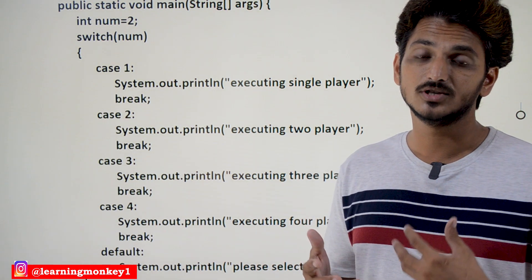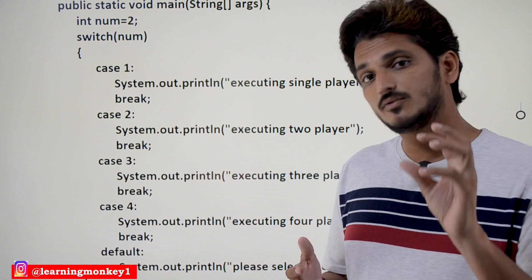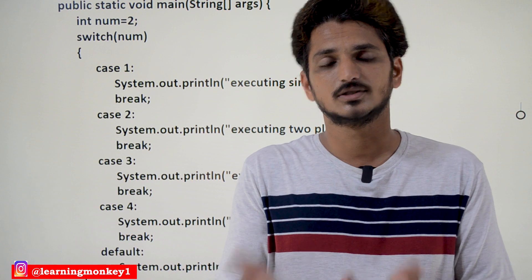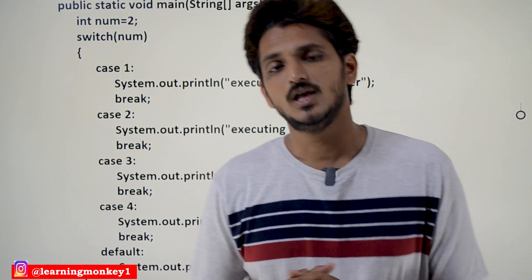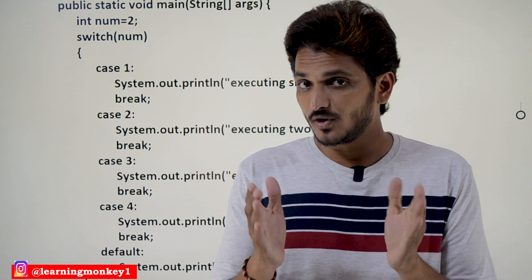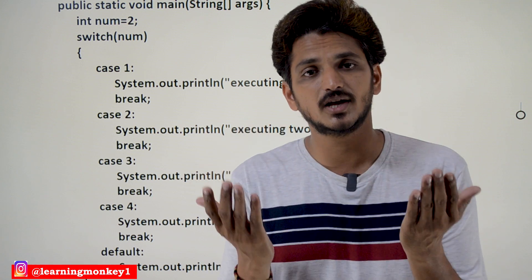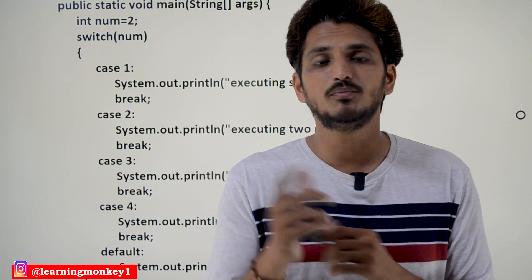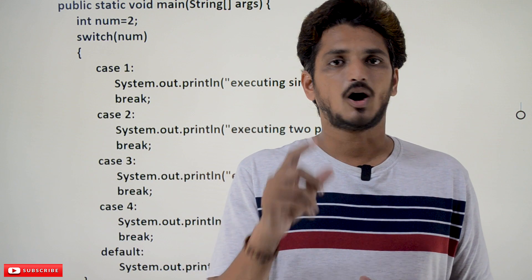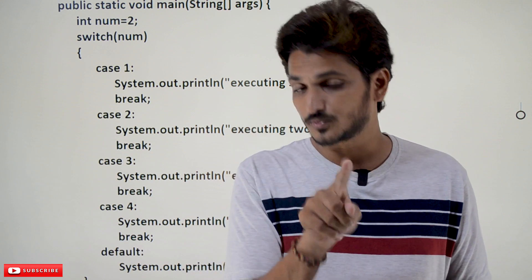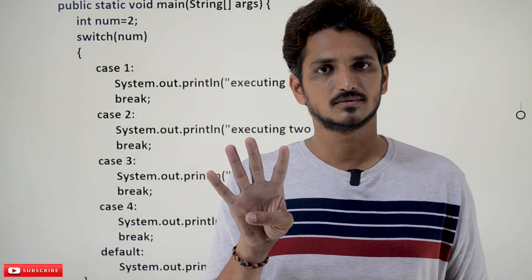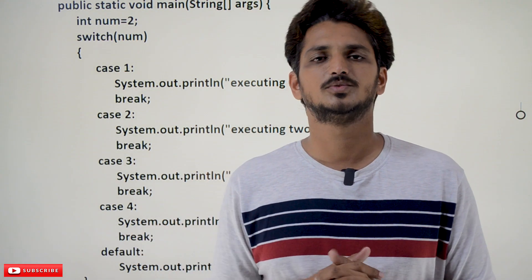This is how the switch statement executes. But we need to understand in which situations we are going to use this. Suppose you open a video game — it shows a message that you can click on any one player option. They provide options: option one single player, option two two players, option three three players, option four four players, and remaining options go to default.